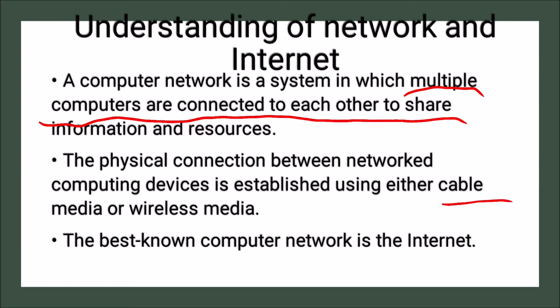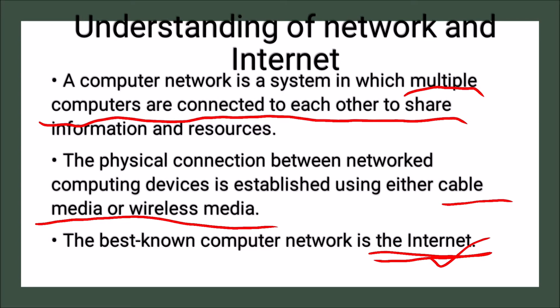The physical connection between network computing devices is established using either wired media or wireless media. In wired media, cables are used — different types such as fiber optic cables and many others. In wireless media, there are no cables; instead, technologies like laser, telecommunications, and Wi-Fi are used. The best and most popular example of a computer network is the internet.